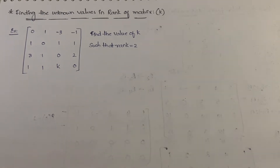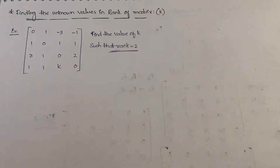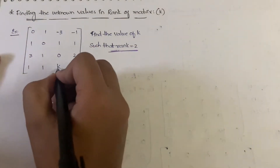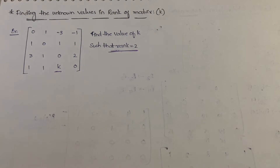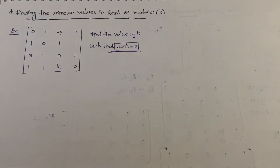Basically, in this kind of problem you'll be given a matrix. Usually we use echelon form to calculate the rank, but here the rank is already given. The thing you have to find out is the unknown value k in the matrix. Rank equal to two means you have two non-zero rows and the others are zero rows.